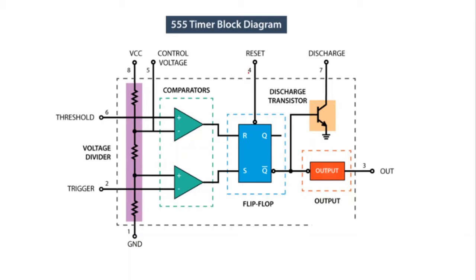The pins are easy to remember: pin number 1 is ground at zero volts; pin number 3 is the output, which is used to drive TTL loads and can source or sink up to 200 milliamperes of current; and pin number 8 is the supply voltage VCC. The supply voltage for the 555 timer is around 4.5 to 15 volts.